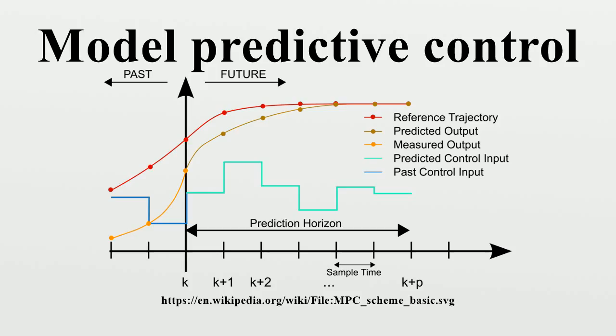Non-linear MPC: Non-linear model predictive control, or NMPC, is a variant of model predictive control that is characterized by the use of non-linear system models in prediction.